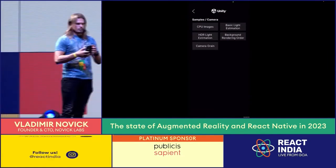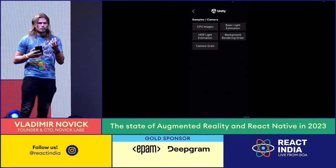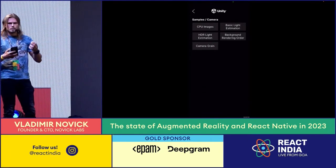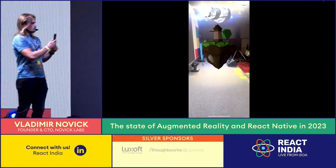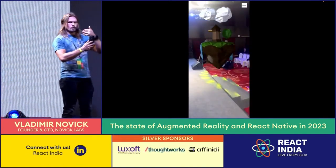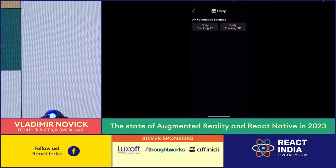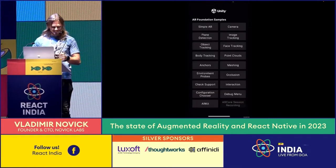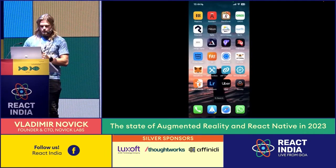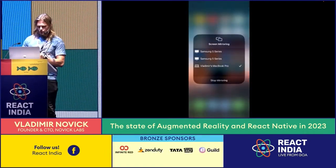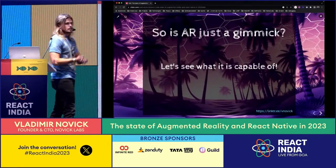Another example: we can get basic light estimation. When we're in AR, it's important to understand how lights work in 3D space - it's more complex because we don't know the real-world lights. Let's get back to our slides. We saw what AR is capable of, and you saw the Unity logo on top of this app. So the question is: how many of you have heard about the Unity game engine?